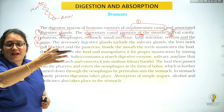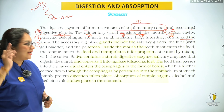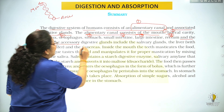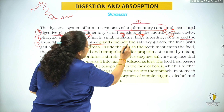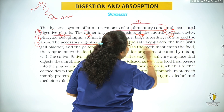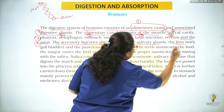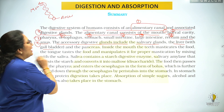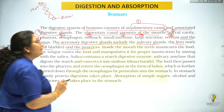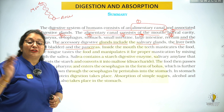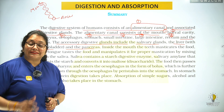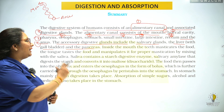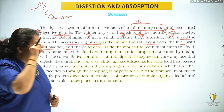Anterior pe mouth hai, posterior pe anus hai. The accessory digestive glands include salivary glands, liver with the gall bladder, and the pancreas. Jo digestive glands hain us mein liver, pancreas and salivary glands maujud hain.